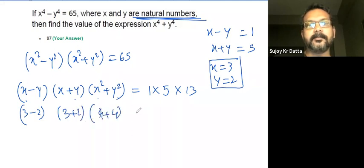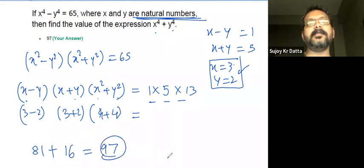It actually matches 1, 5, 13. The question is asking for x to the power 4 plus y to the power 4, so that's 3 to the power 4, which is 81, plus 2 to the power 4, which is 16. Your answer is 97.